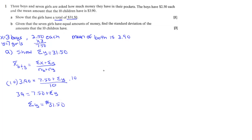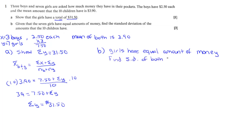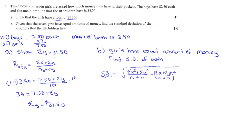In part B, it's given that the seven girls have equal amounts of money and they want us to find the standard deviation of all ten children. Let's start by writing the formula: we're going to take the sum of the X squares plus the sum of the Y squares, divided by both n's, and subtract the mean squared.